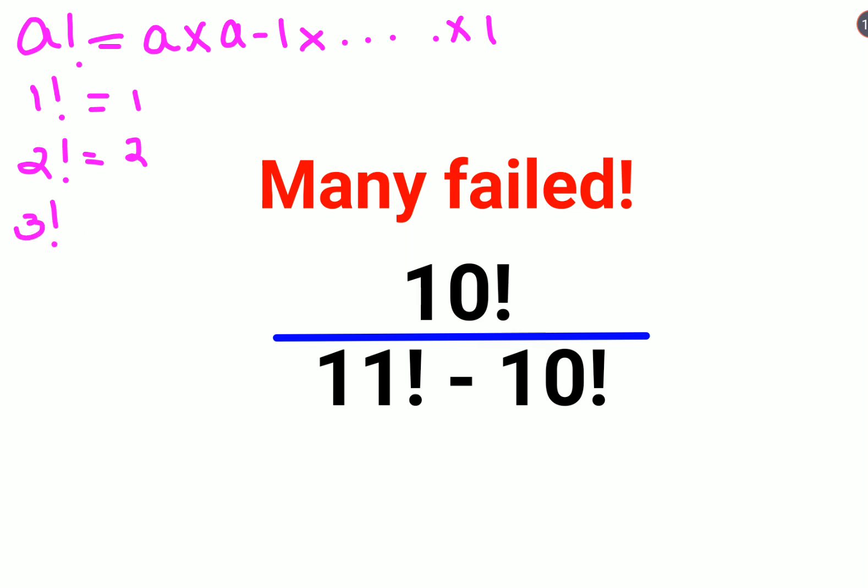3 factorial will be 3 into 2 into 1 that gets you 6 and 4 factorial will be 4 into 3 into 2 into 1.